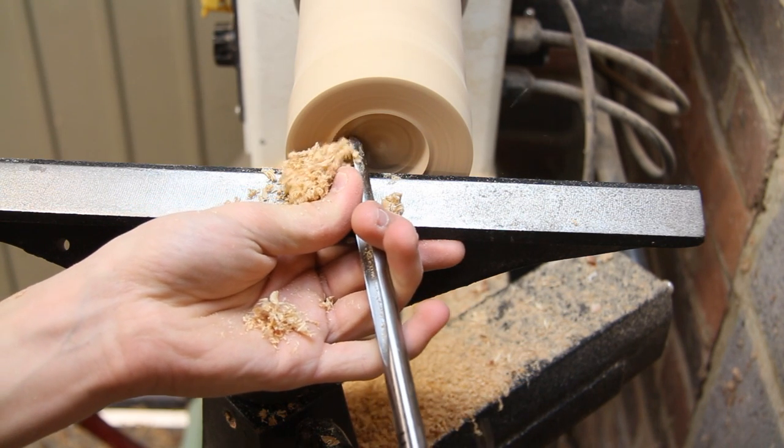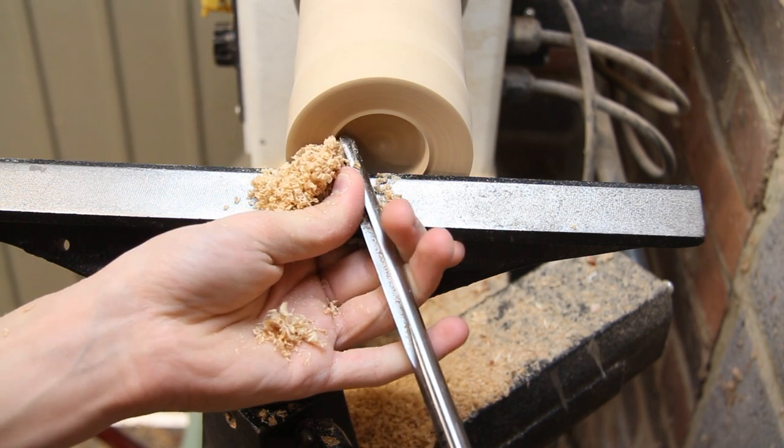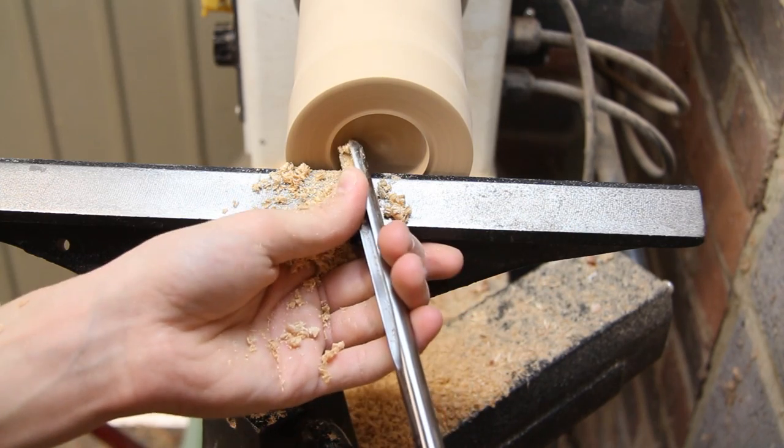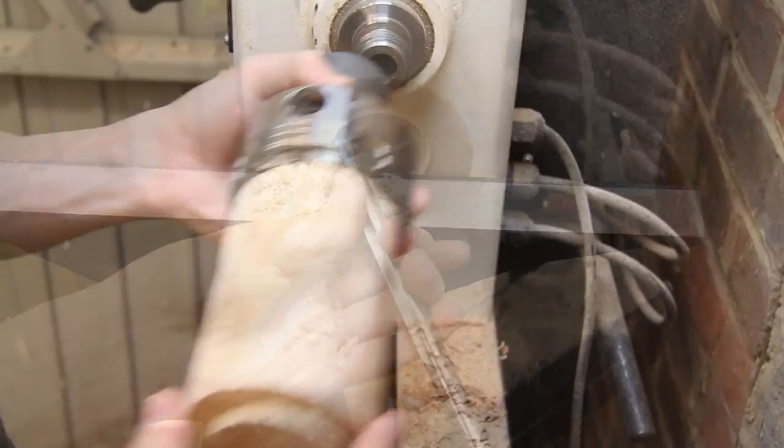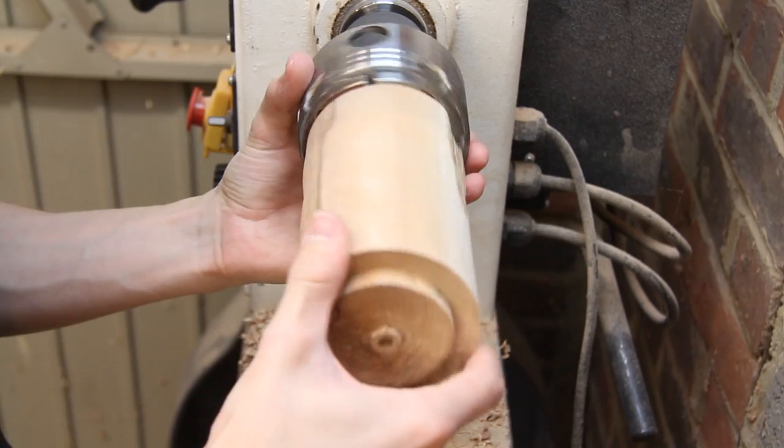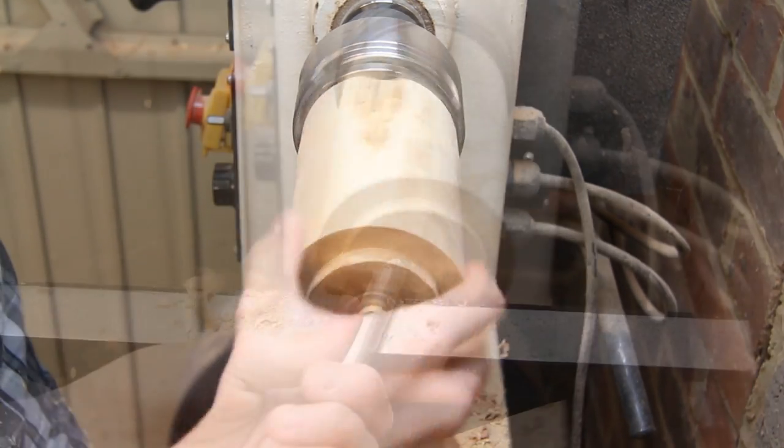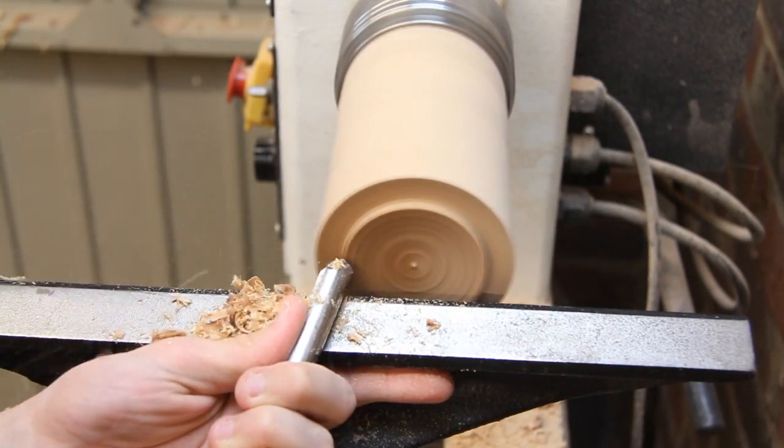Right now I'm cutting a recess in the bottom so that I'll be able to reverse this for hollowing. And when it's flipped around I can begin to hollow it out.